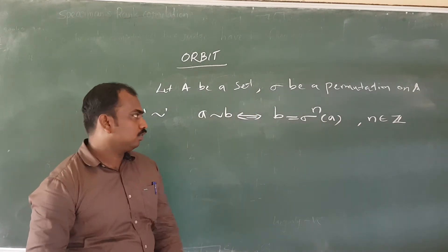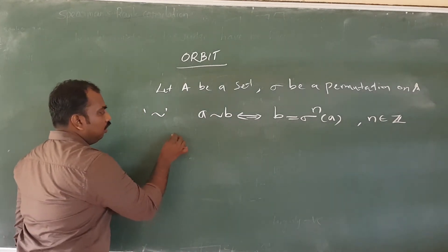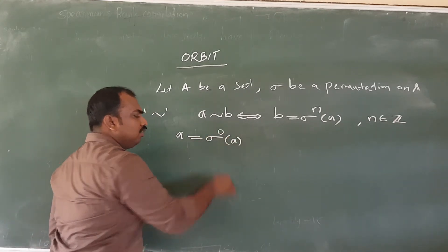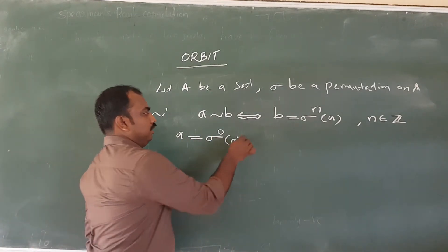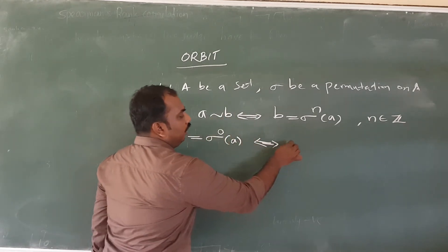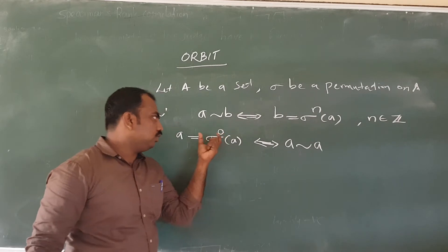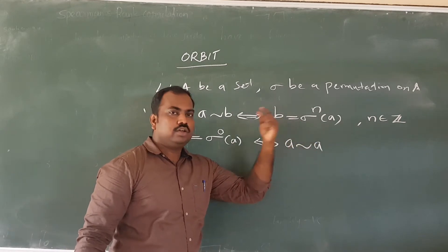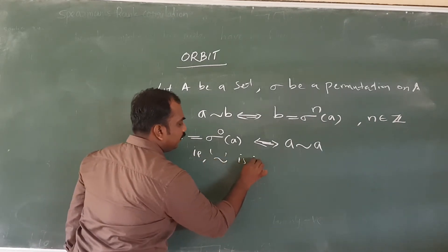It may be positive or negative. Now, A is equal to sigma raised to 0 of A, and sigma raised to 0 is the identity. So A equals sigma raised to 0 of A, which implies A is related to A, since n is 0 and 0 is an integer. A equals sigma raised to 0 of A. Therefore, A is related to A — that is, the relation is reflexive.